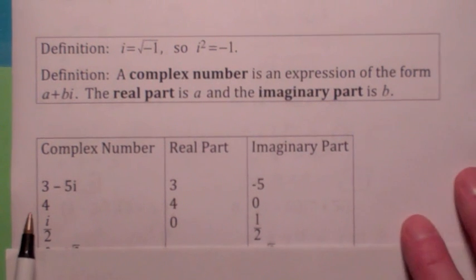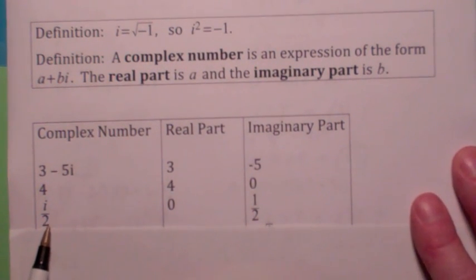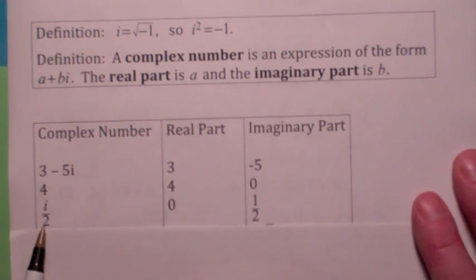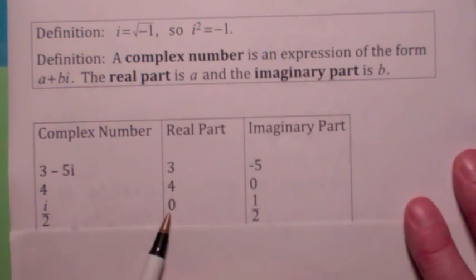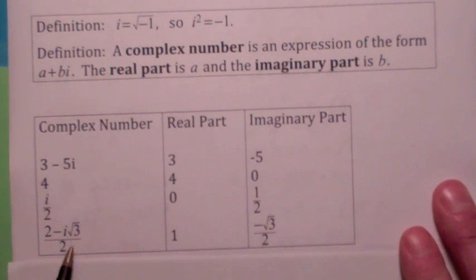We call this a purely imaginary number or just simply an imaginary number, i/2. In this case, the real part would be zero and the imaginary part would be 1/2. The complex number 2 - i√3/2, the real part would be 1 if you simplify it and the imaginary part would be -√3/2.